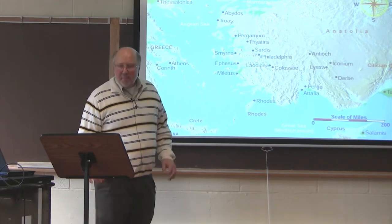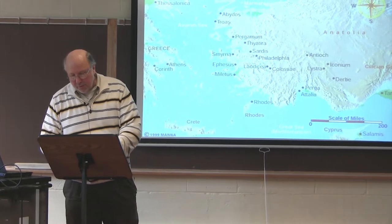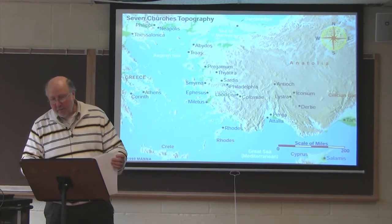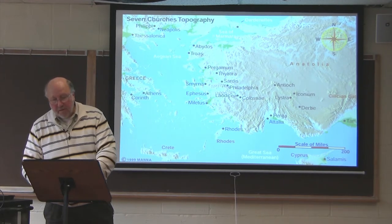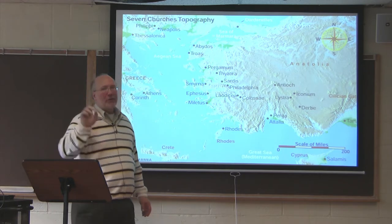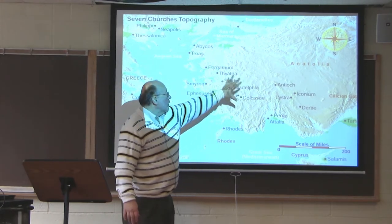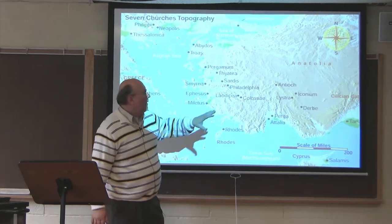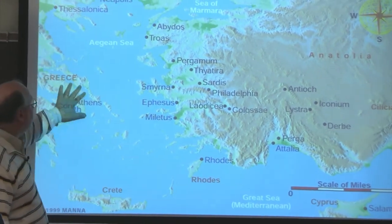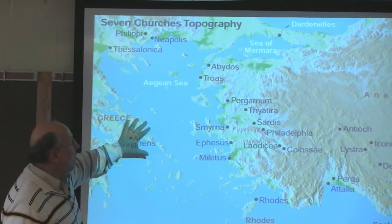This is a map of Turkey, and we're shifting gears now to the missionary journeys of the Apostle Paul. There's going to be a first, second, and third missionary journey of Paul, and a lot of them take place in this area of Turkey. Turkey is what they call Asia Minor. Israel is down there off the map, and over here is Greece and Macedonia. Macedonia is up there, Greece is down here, and this is Turkey.